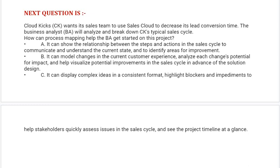Option B: It can model changes in the current customer experience, analyze each change's potential for impact, and help visualize potential improvements in the sales cycle in advance of the solution design. Option C: It can display complex ideas in a consistent format, highlight blockers and impediments to help stakeholders quickly assess issues in the sales cycle and see the project timeline at a glance.